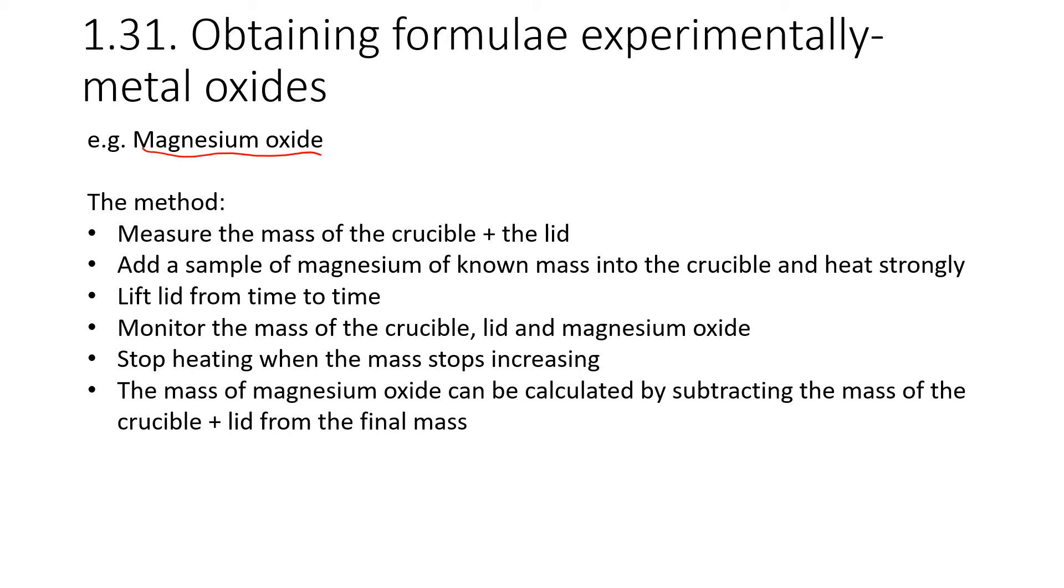You take your crucible and the lid that you're going to use when they're empty and you measure their mass. So whatever that is, you could say maybe it's 120 grams. Then you're going to add a sample of magnesium of known mass. So it doesn't really matter how much you add, but you need to know the mass of magnesium that you're going to add. You can put that in the crucible by itself. You're then going to heat it strongly with a blue flame.